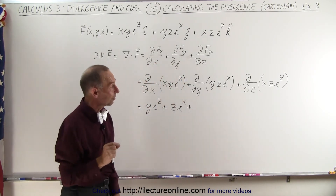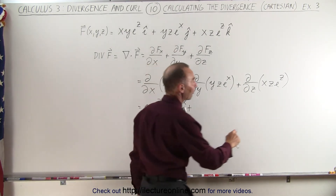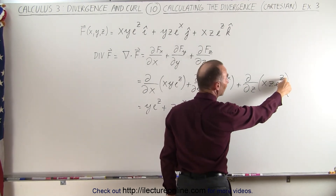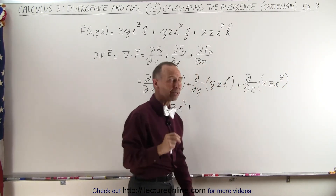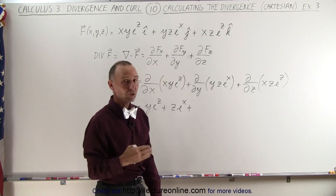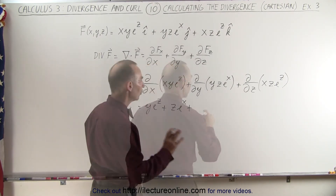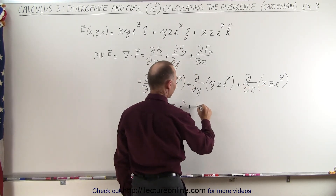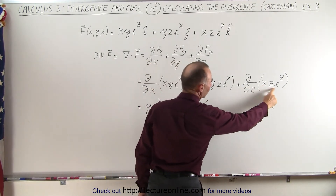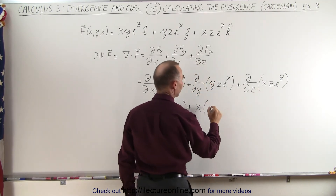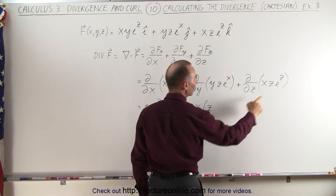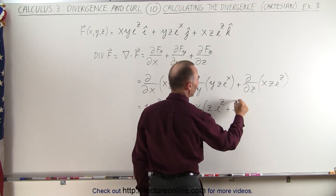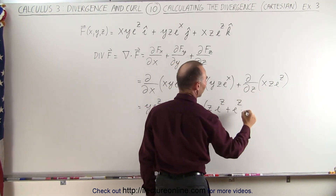Now here it's something slightly different, because notice we have x as the constant, but z is the variable, and e^z — that's a variable as well. So we have a product quantity here, so we do have to use the product rule. This becomes x times — using the product rule — we take the first times the derivative of the second, which is e^z, plus the second times the derivative of the first, which is one.